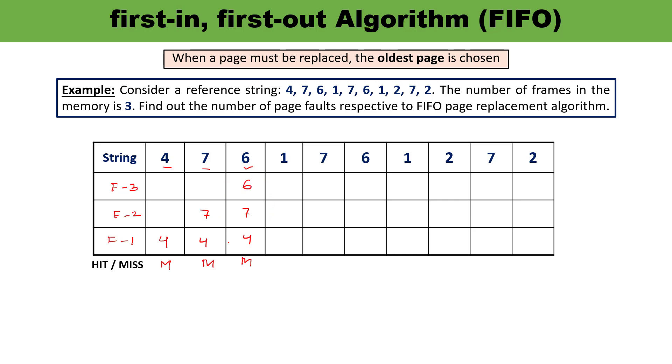So when 1 arrives, first you are going to check whether 1 is available over here. 1 is not available. So when 1 is not available, which is going to be replaced? Means first in, 4 was entered first. So 4 will be replaced by 1 and the remaining numbers are same. This is also the condition of miss.